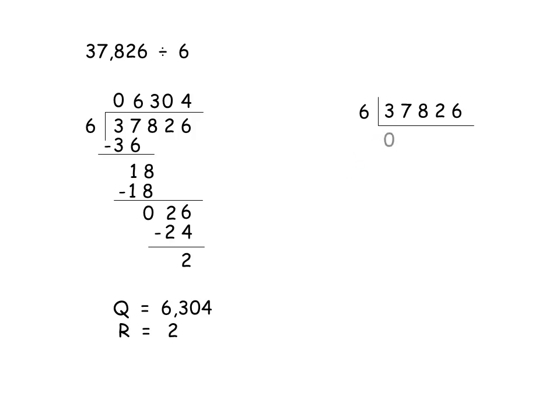I start dividing. I cannot divide 3 so I put a 0 and take 3 and 7 together. 37 divided by 6 will be 6. 6 6's are 36 and the remainder is 1. So, that 1 I will write above 8 and divide 18 by 6. 6 3's are 18 so I write 3 as the quotient and the remainder is 0. Since I can't divide 2 by 6, I write 0 and take 2 and 6 together. 6 4's are 24 and 26 minus 24 is 2. So, that 2 is the final remainder so I write it on top and draw a circle around 2 to make it clear. And then, I write the quotient and the remainder as the answer.